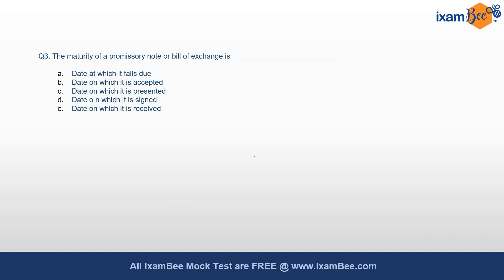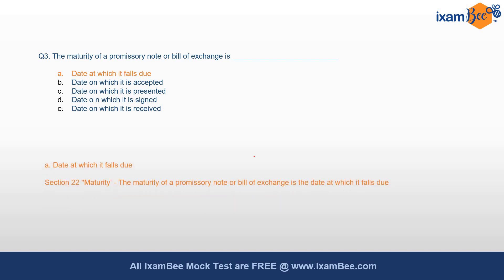The next question: what is the date of maturity of a promissory note or bill of exchange? The correct option for this is the date at which it falls due. Section 22 of the NI Act deals with maturity, and as per this section, maturity refers to the date the promissory note or bill of exchange falls due.